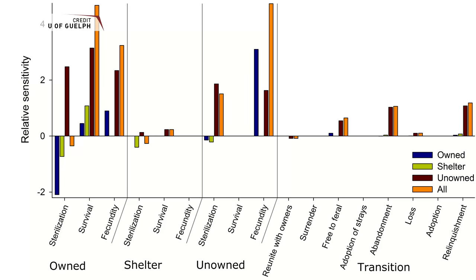So sterilizing unowned cats would lead to the greatest decrease in total cat population size. Thanks for watching — if you liked this video, don't forget to like and subscribe to our channel, and you can always catch us live every first Saturday of the month at 20:00 UTC. Until next time, keep on discovering.